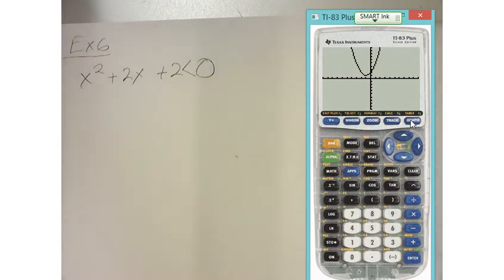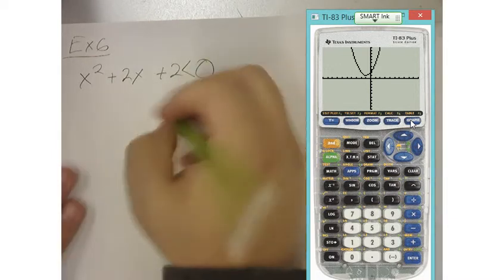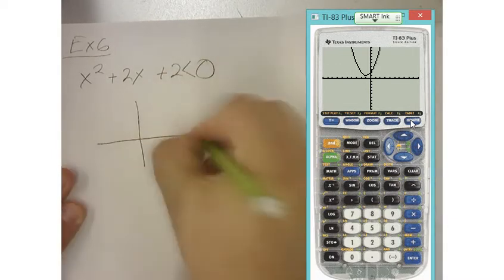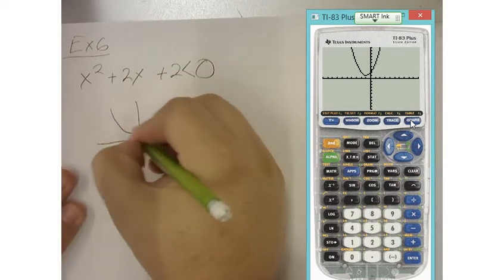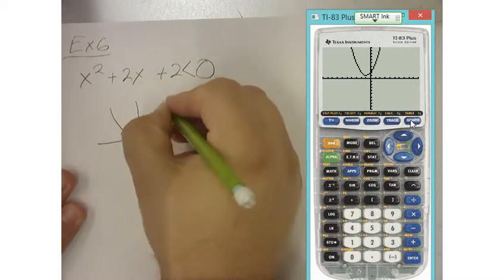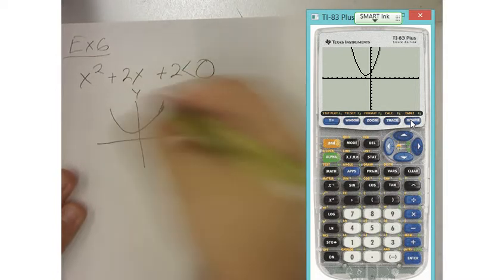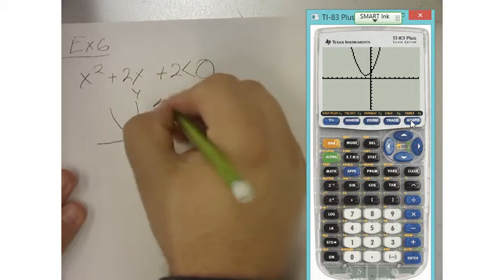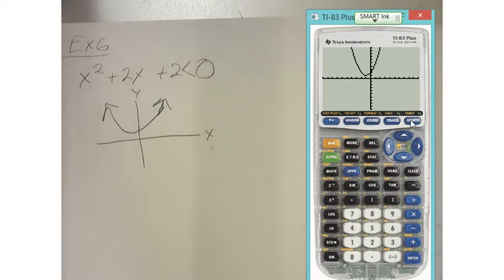So when can I plug in an x-value? And let me sketch this real quick while I've got it on the screen. I've got a graph that looks like this, or this is my y-value, this is my x-value, and that's my graph. When does that cross the x-axis? When is it going to be less than zero?